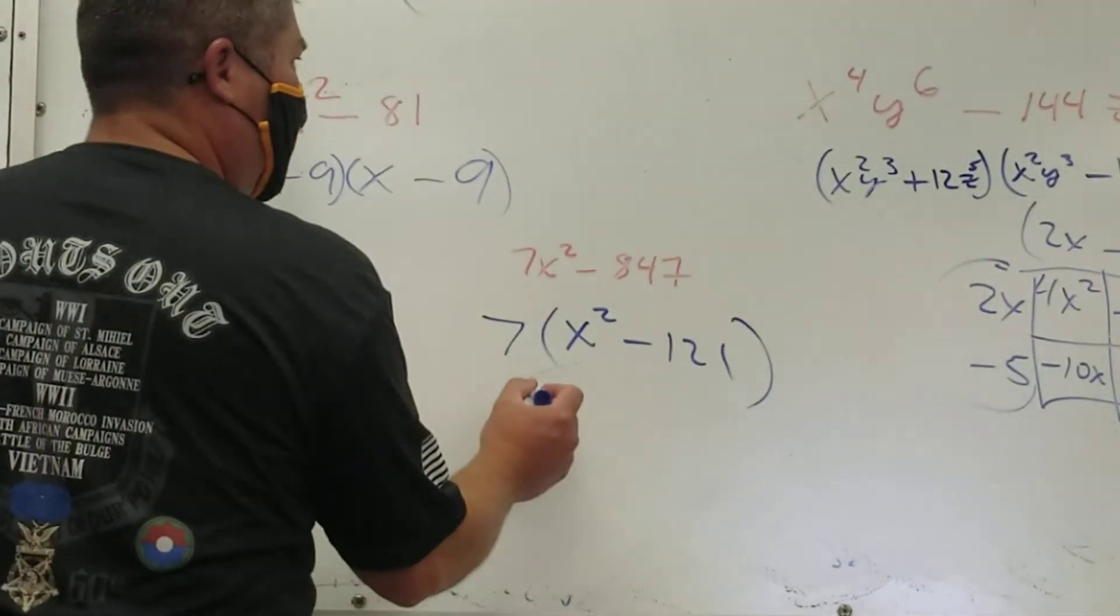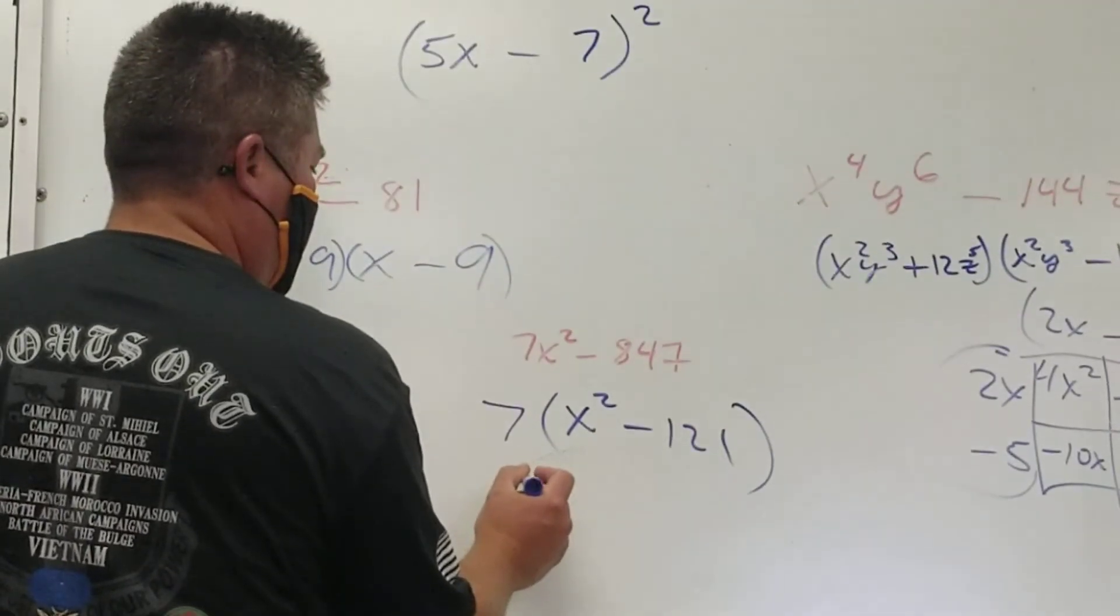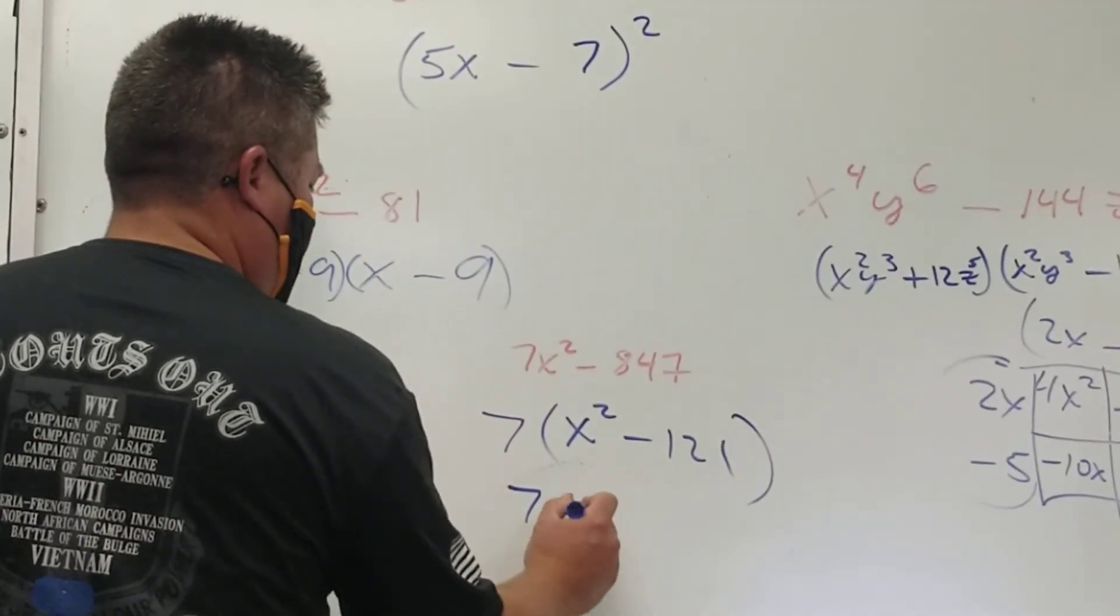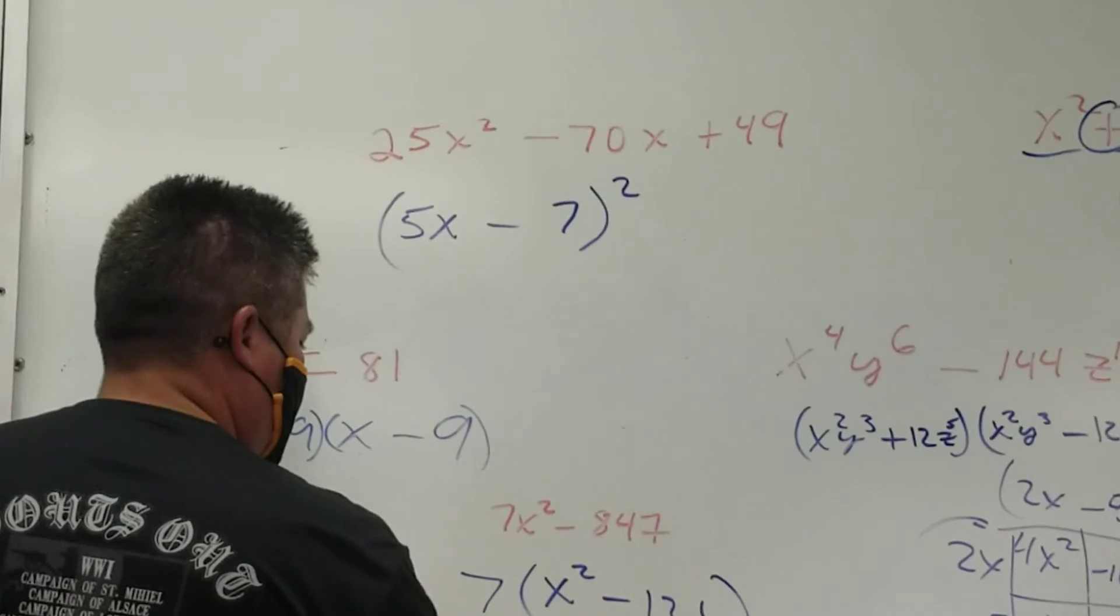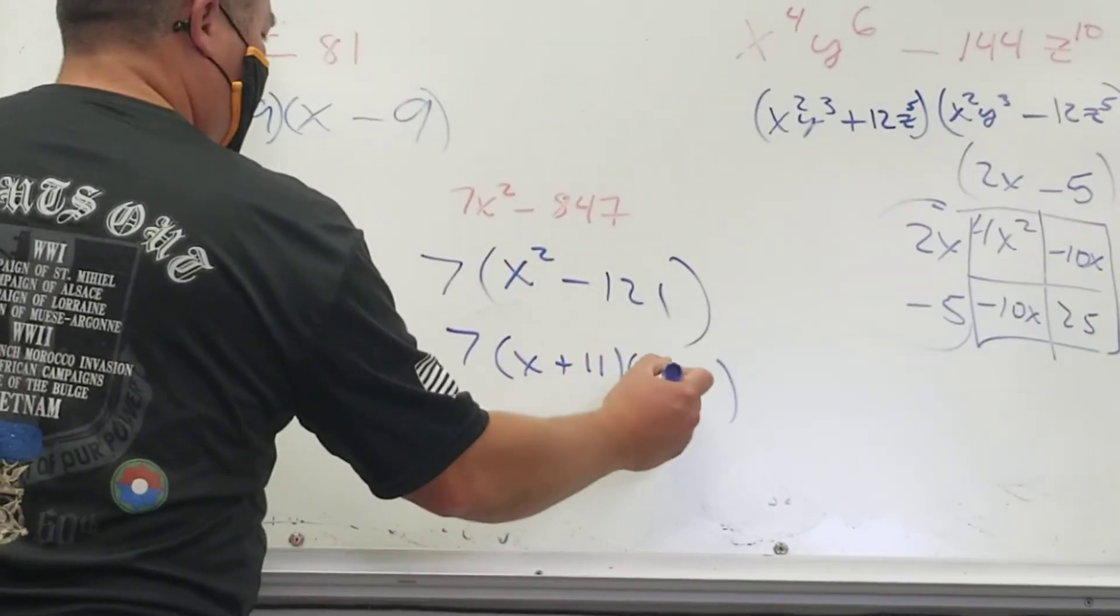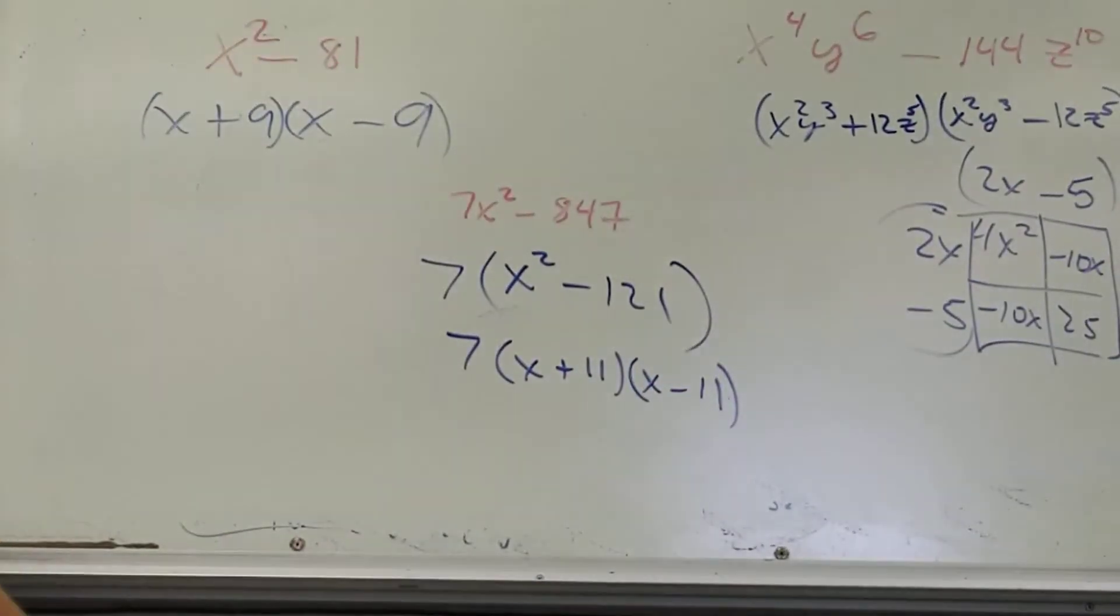Do I have perfect squares now? Yes. What do I got? 7, x, and x, and then what? Plus 11 minus 11. 11. It doesn't really matter.